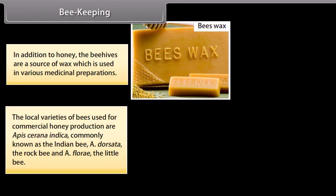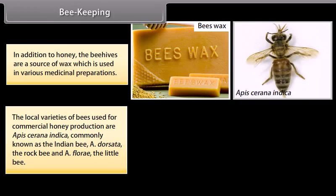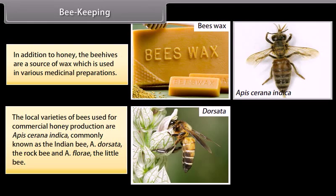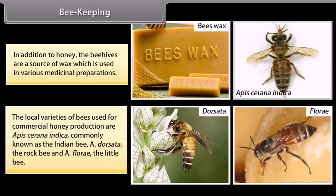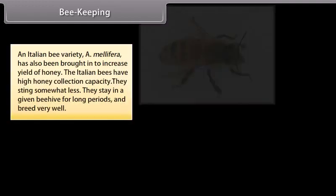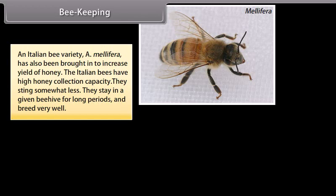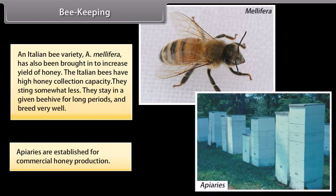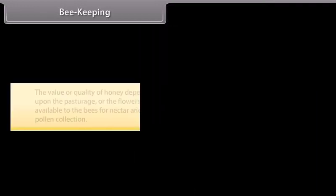The local varieties of bees used for commercial honey production are Apis cerana indica, commonly known as the Indian bee, A. dorsata the rock bee, and A. florea the little bee. An Italian bee variety, A. mellifera, has also been brought in to increase the yield of honey. The Italian bees have high honey collection capacity, stay in a given beehive for long periods and breed very well. Apiaries are established for commercial honey production. The quality of honey depends on the pasturage, or the flowers available to the bees for nectar and pollen collection.